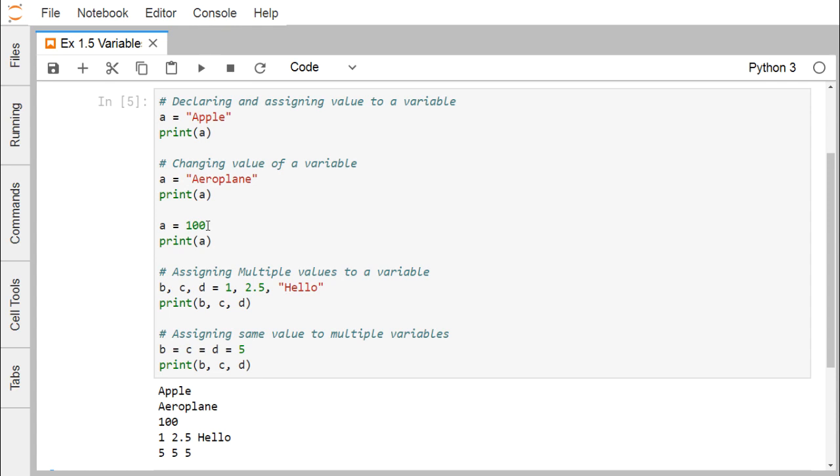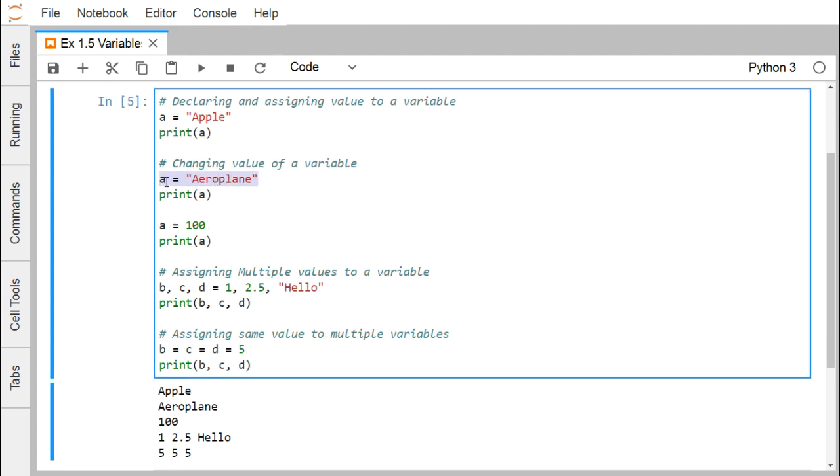We can define variables as when we require to use them. Here, a = 'aeroplane' means a has got the data type string, and in the next part of the code a will be treated as a string until it is getting initialized with some other data type value.